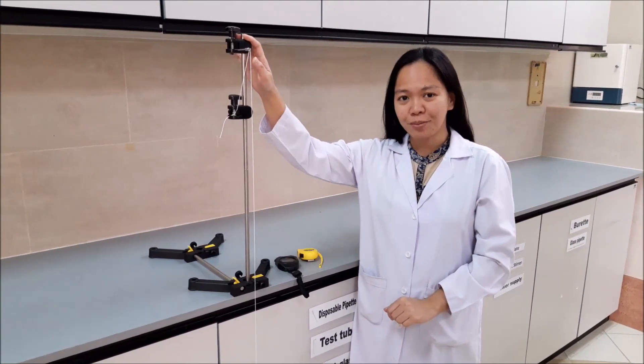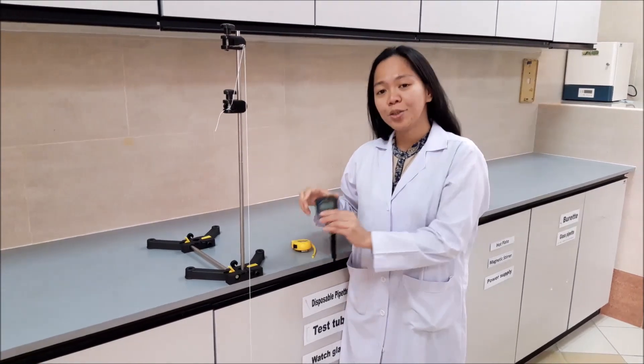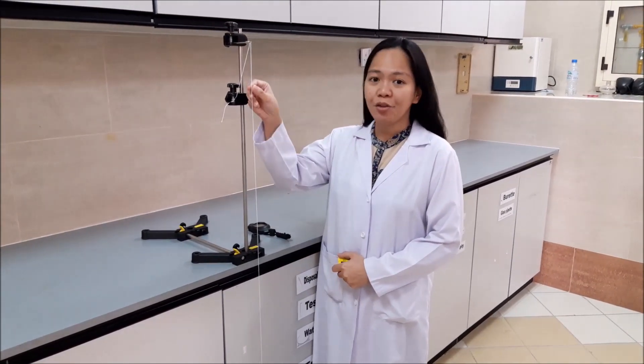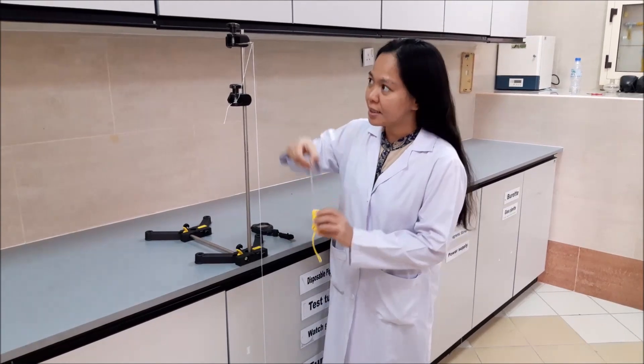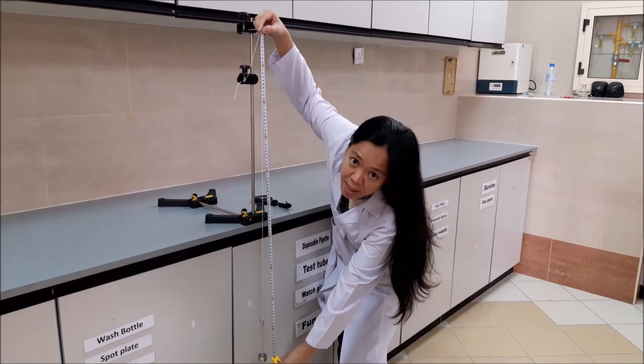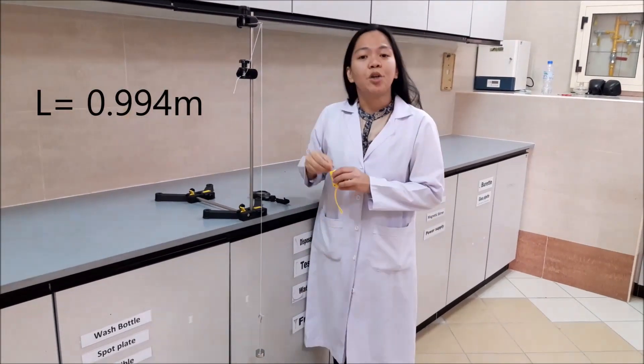We have the pendulum set up. We will also use a stopwatch and a measuring tape. In the first phase of our experiment, the length of our pendulum is 99.4 cm or 0.994 m.